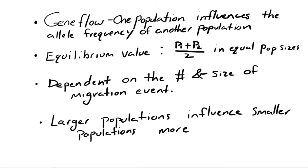To summarize: gene flow is when one population influences the allele frequency of another population. The populations will eventually reach an equilibrium value, which we can calculate by taking the average of the two allele frequencies if the two populations have equal sizes. How quickly the populations reach equilibrium depends on the number and size of the migration events, and larger populations influence smaller populations more.